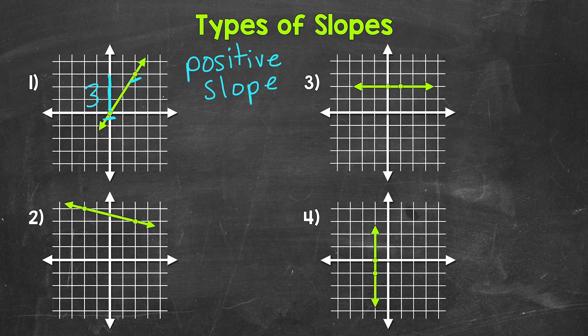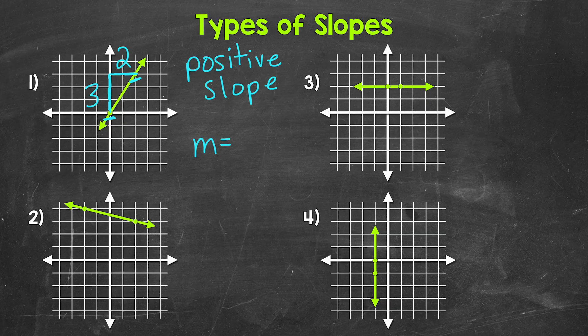Our rise is three, and that's a positive three because we went up. Now we need the run, the horizontal change. We go over one unit, two units, and we are at the other point. So our run is two, and that's a positive two since we went to the right. So slope M equals our rise of three over our run of two — the slope of this line is three halves. Our first type of slope: positive slope.